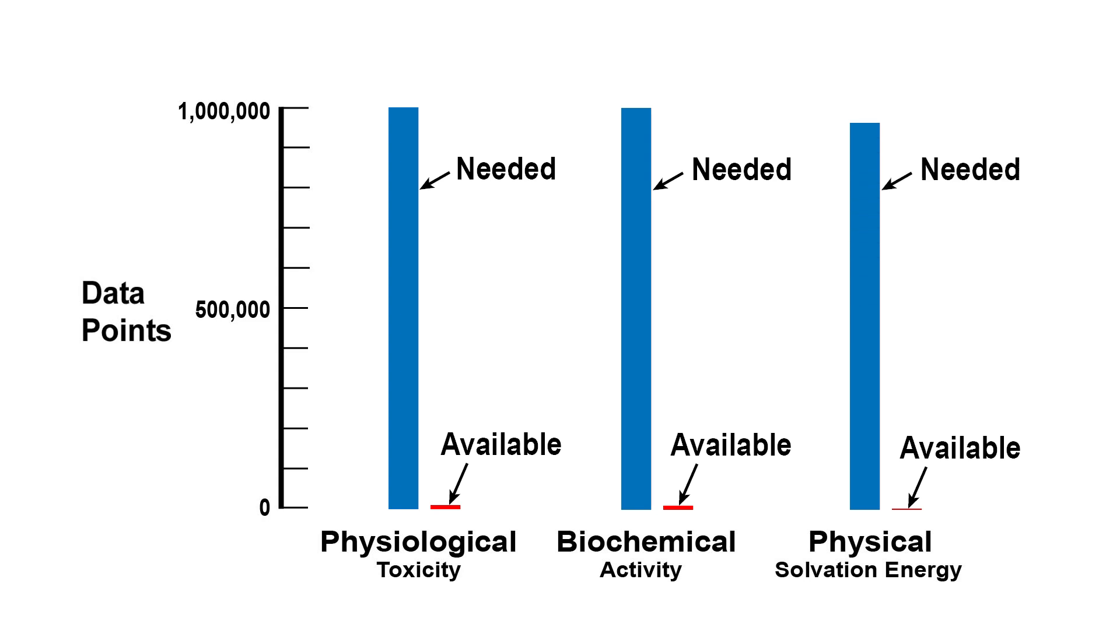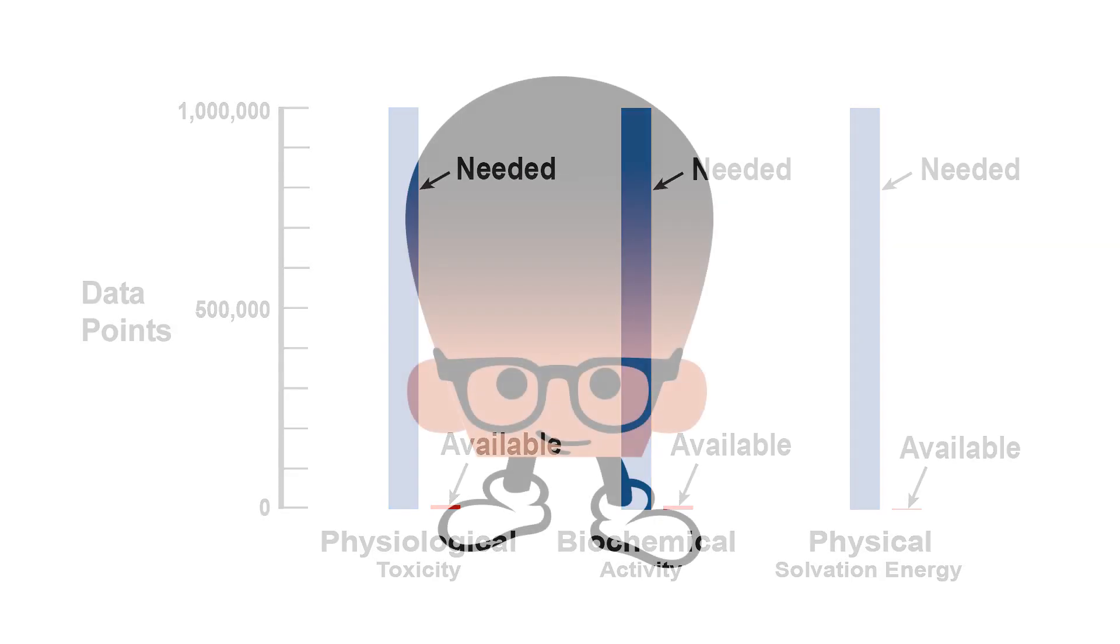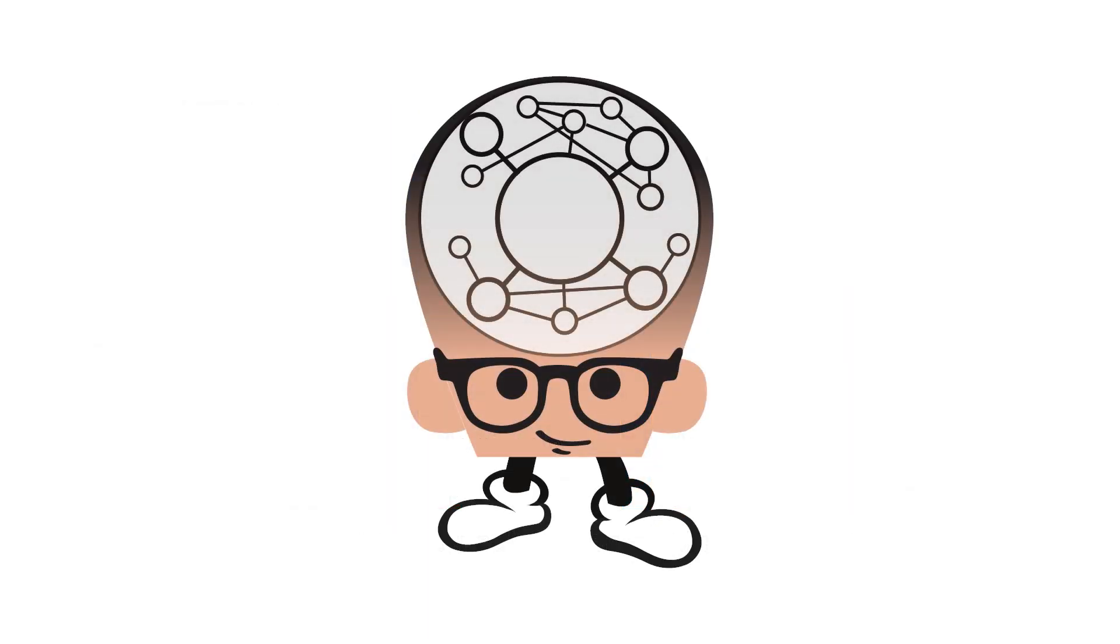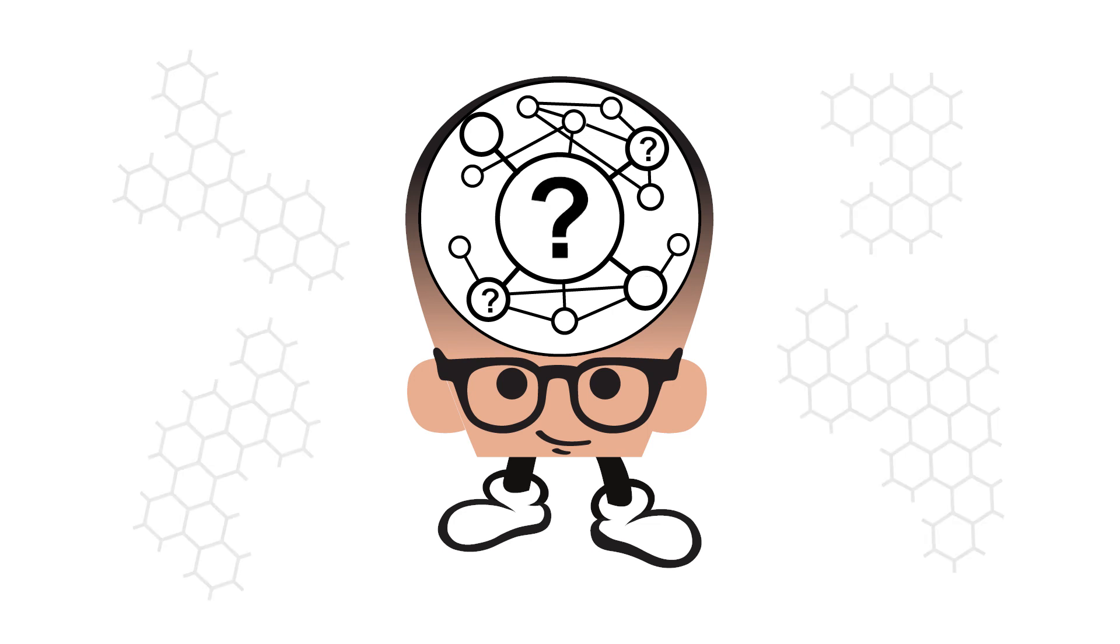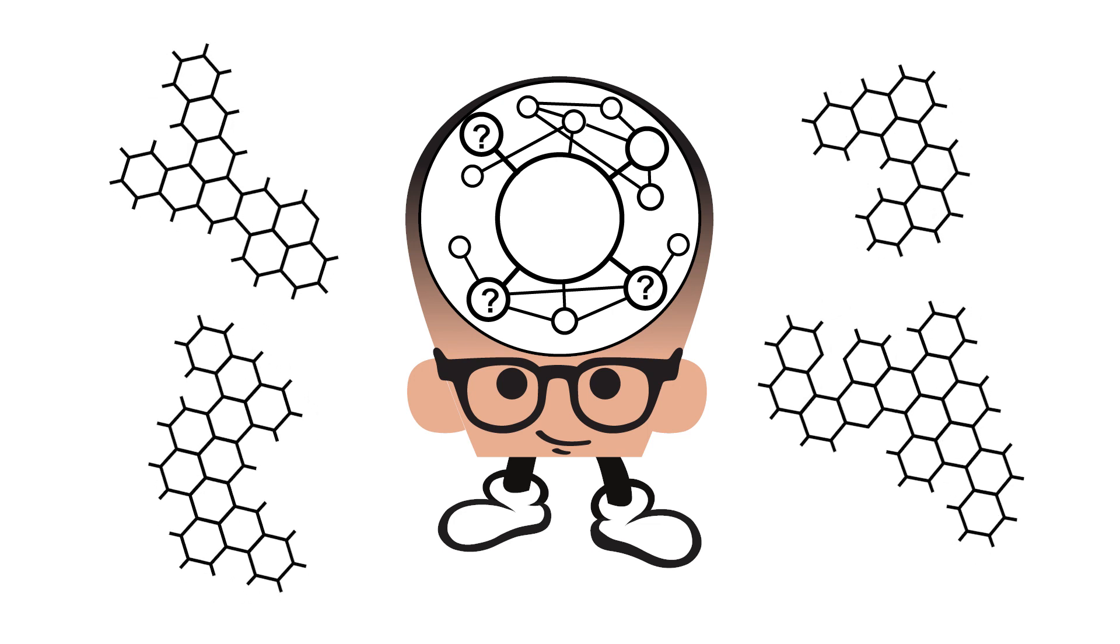A neural network with randomly initialized weights is like a blank slate which needs to learn representations about the data it ingests. How do we train it to learn representations about chemistry when we don't have much labeled data?